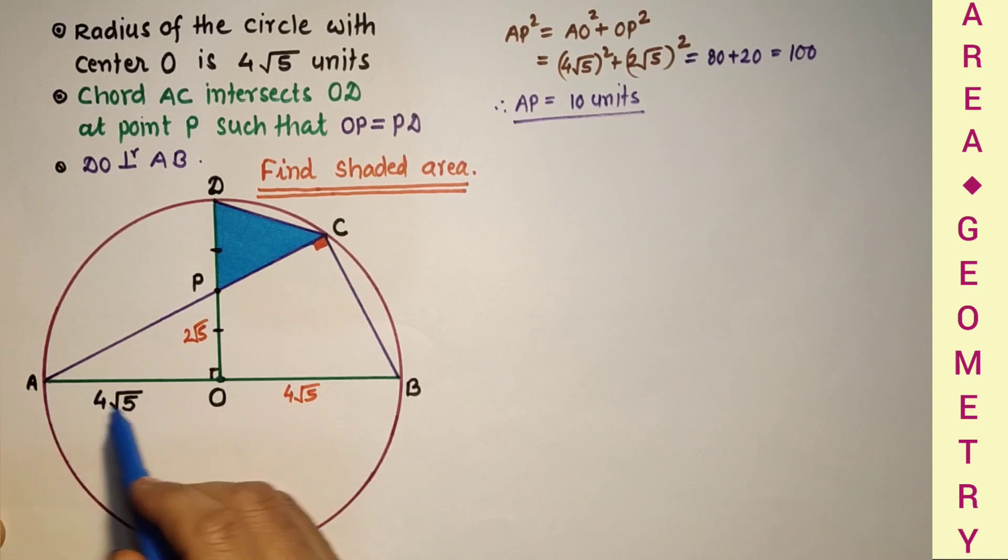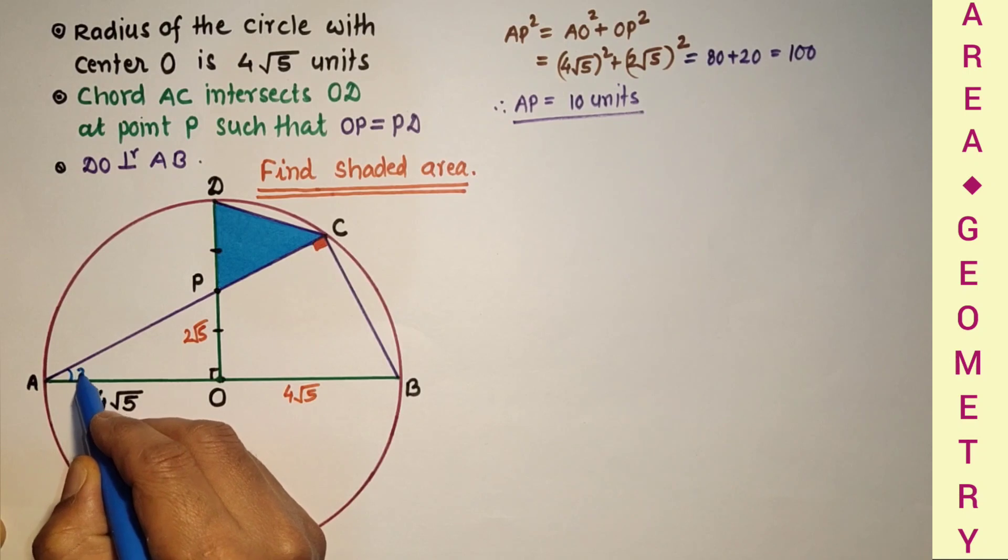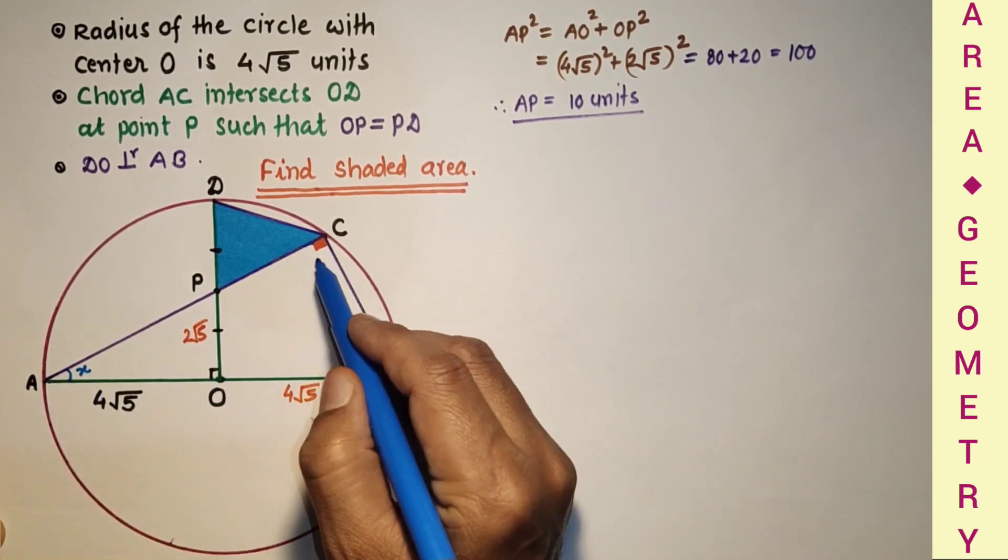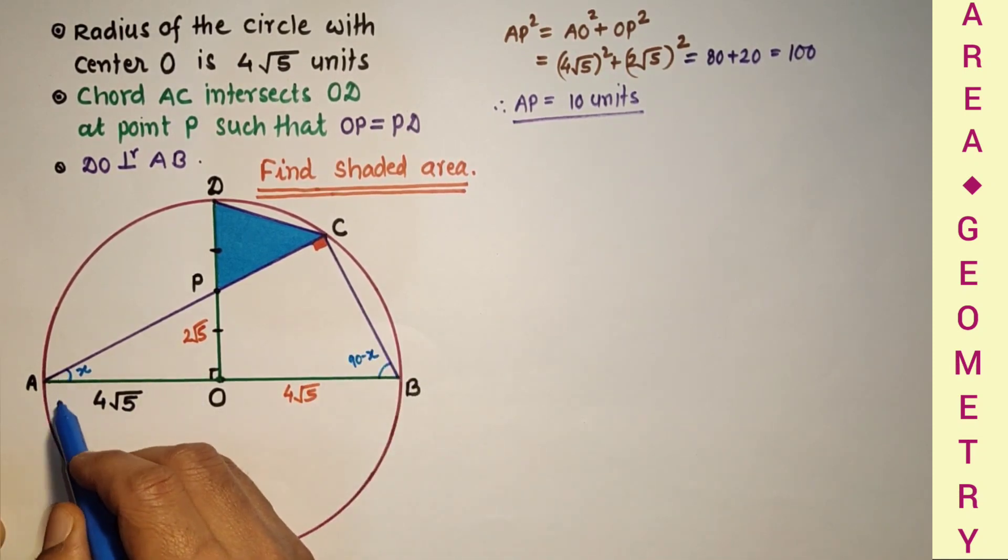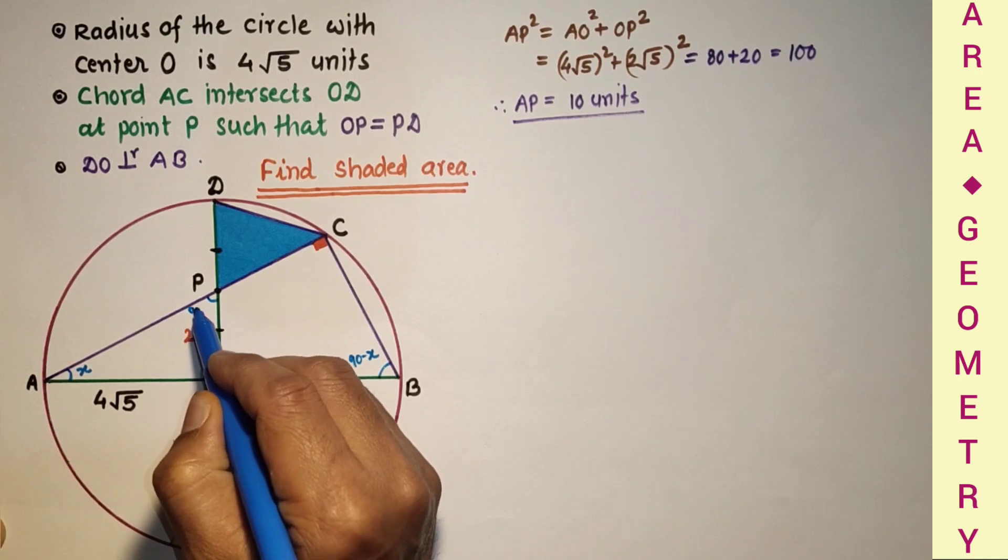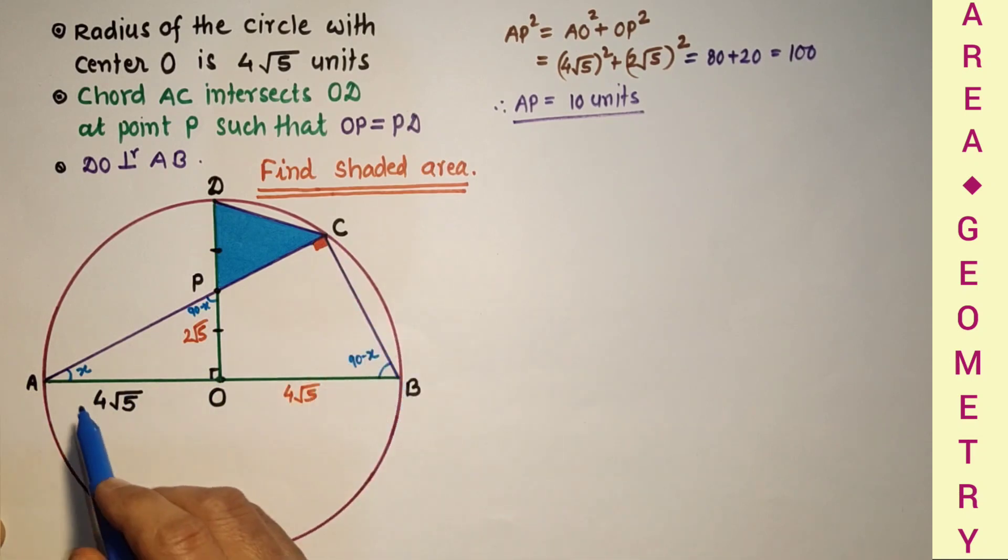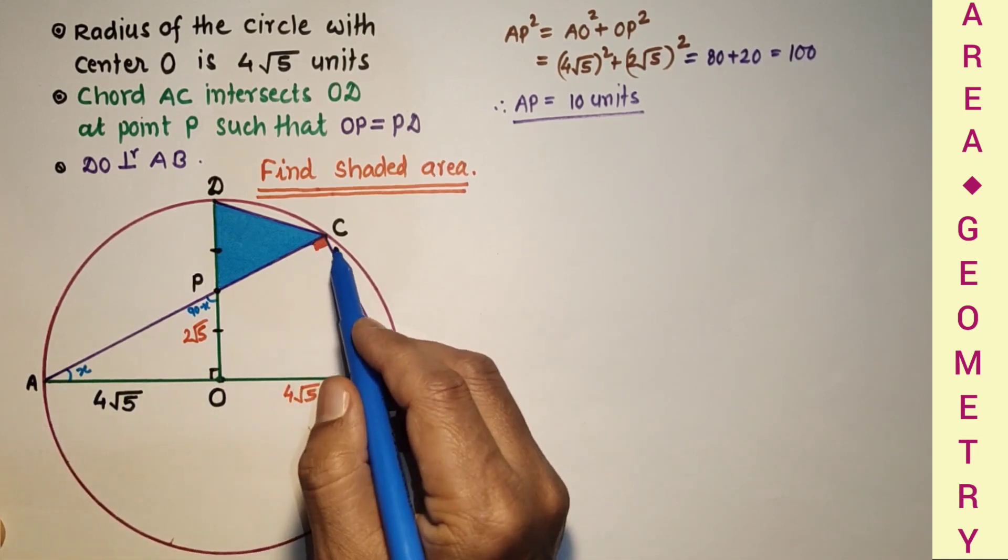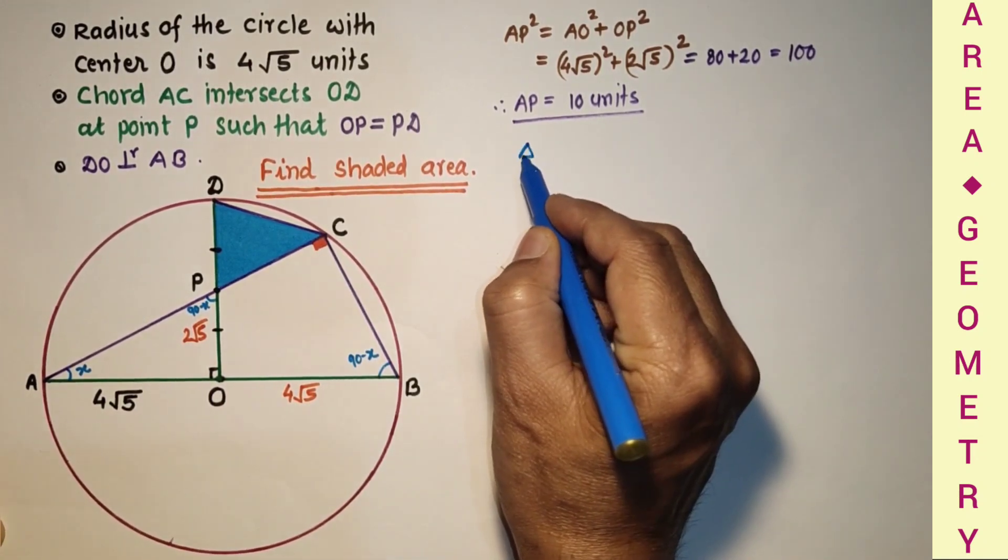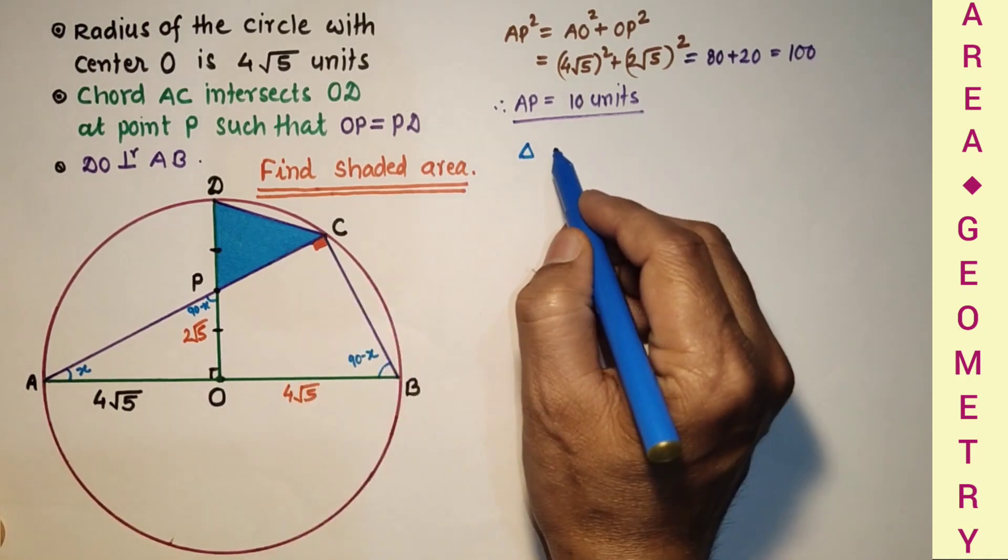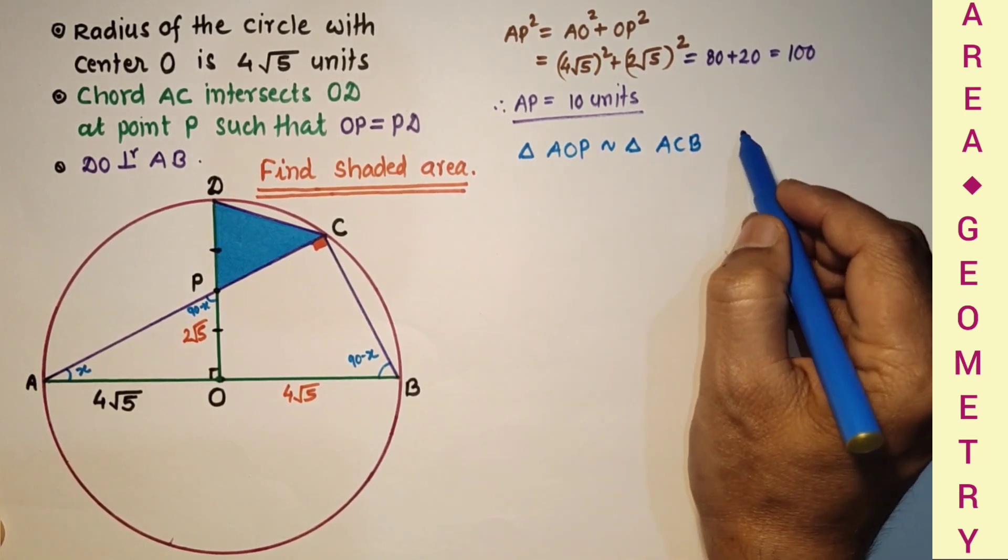In these two triangles, triangle AOP and ACB, let us suppose this angle is X. So this is X, this is 90, this will be 90 minus X. And if this is X, this is 90, so this is 90 minus X. So in this triangle X, 90 minus X, 90. And this in this triangle X, 90, 90 minus X. So by AA test of similarity, these two triangles are similar. Therefore triangle AOP is similar to triangle ACB by AA test of similarity.